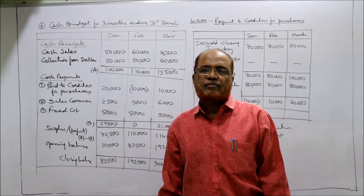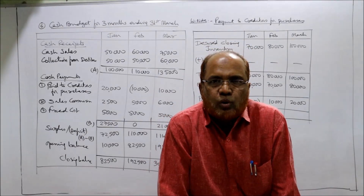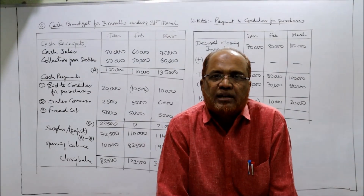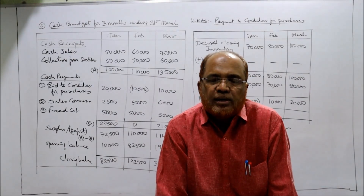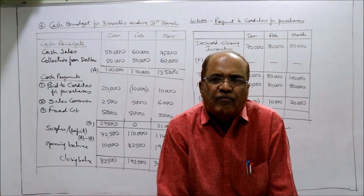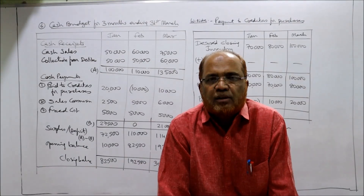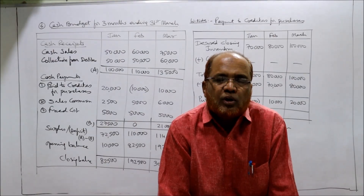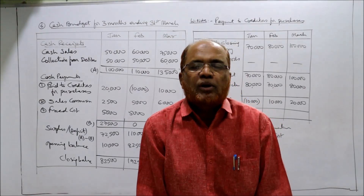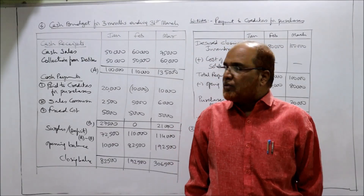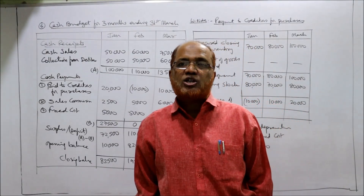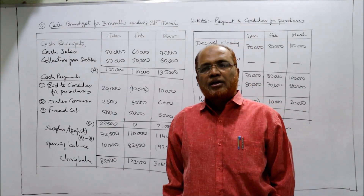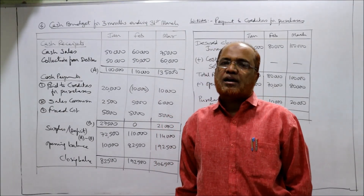So totally 6 problems we have done on cash budget. Remember, in this unit number 4 we have totally 5 topics. The 5 topics are cash management, receivables management, inventory management, working capital management, and the last one, dividend policies. In examination, the problem may be asked from any one of the topics. Very rarely they will ask a problem on cash management, but most often the problem will be asked from dividend policies, or working capital, or receivables management. So we have completed one part — this part is cash management — covering how to manage cash by making a cash budget. Inshallah, we will start the next unit in the next session, that is receivables management. Thank you very much.